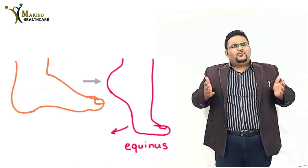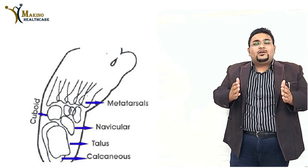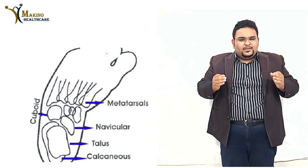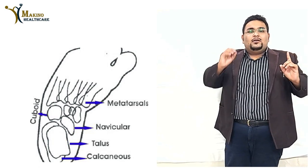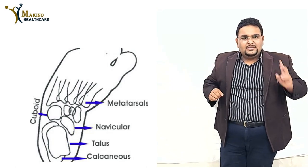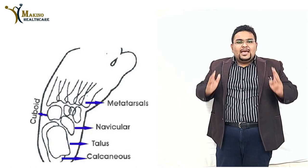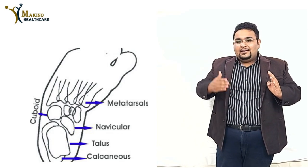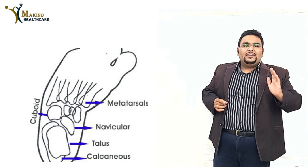If the foot does not respond to conservative management, surgical indications are considered using the five R's: first, no Response to conservative treatment; second, Rigid club foot; third, Relapsed club foot; fourth, Recurrent club foot occurring again and again; and fifth, Resistant club foot.